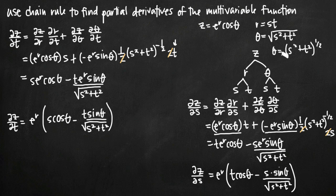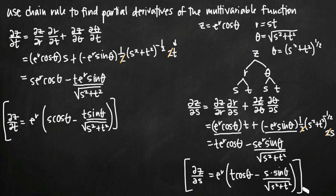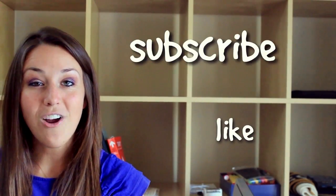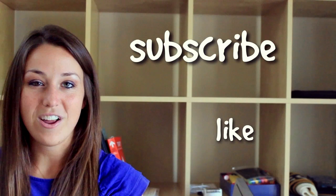Because we had two independent variables, our final answer includes one partial derivative for z in terms of t and one partial derivative for z in terms of s — one each for each independent variable. I hope you found that video helpful. If you did, like this video and subscribe to be notified of future videos.